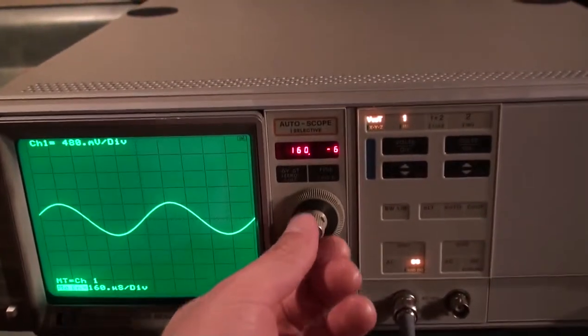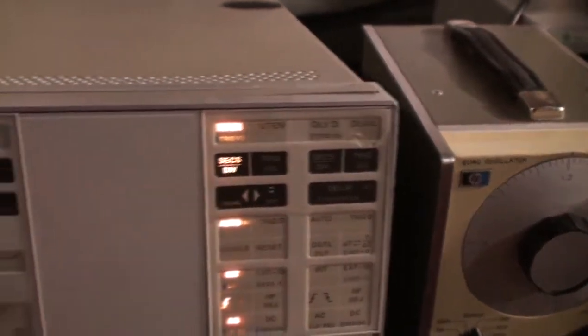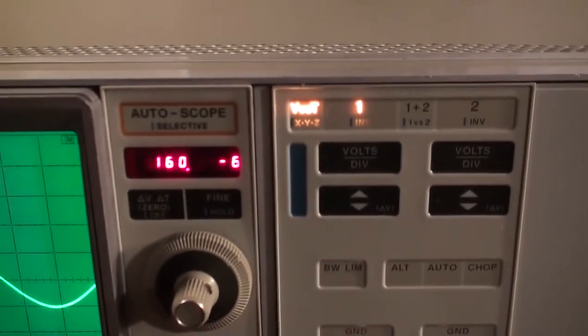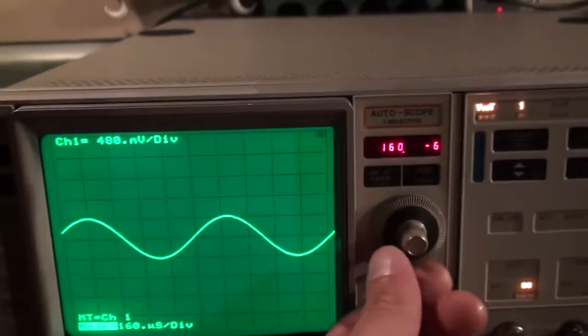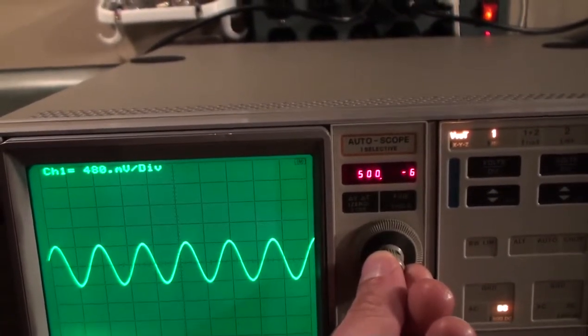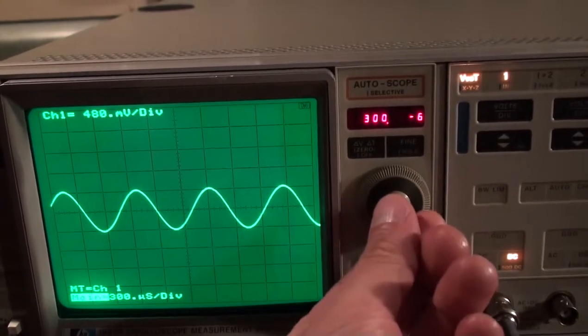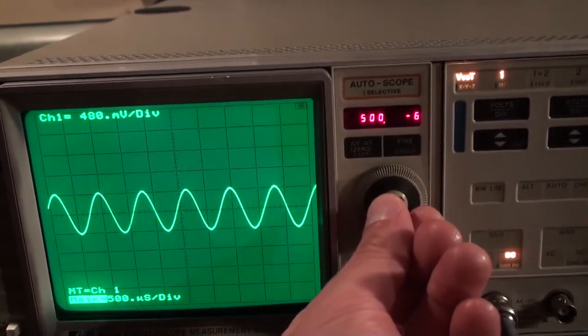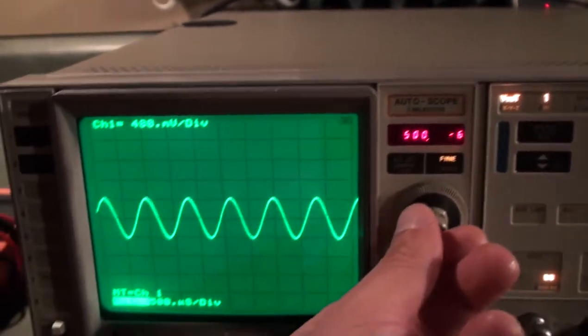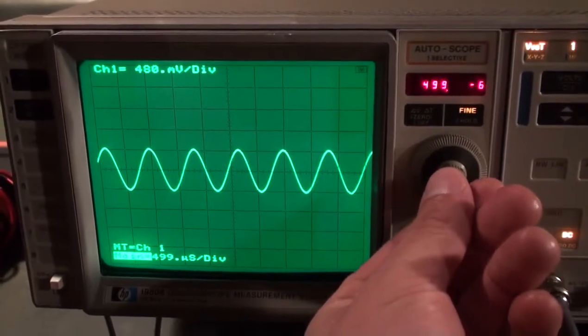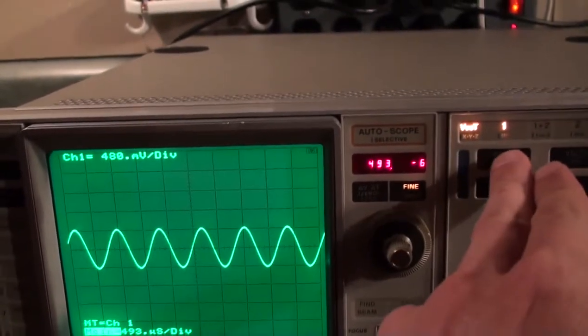this scope is controlled with this middle knob here. For instance, in the time section we've selected seconds per division - it's got this cool little display in the middle that also tells you the magnitude on the screen. You can see at the bottom here we're at a hundred microseconds per division, but if we press this fine button here, you can move one microsecond per division. This thing is incredibly accurate. And that's the same